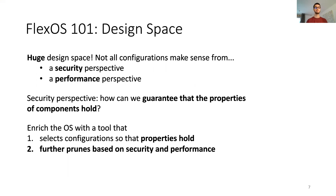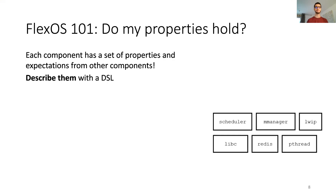In order to tackle this problem, we propose to enrich the operating system with a tool that on one hand selects configurations so that properties hold, and on the other further prunes based on security and performance. Taking a look at the problem of properties, if we want to be able to automatically reason about them, we need to have a way to describe them. So we have designed a domain-specific language that allows us to describe the properties of each component and the expectation that it has on the properties of other components.